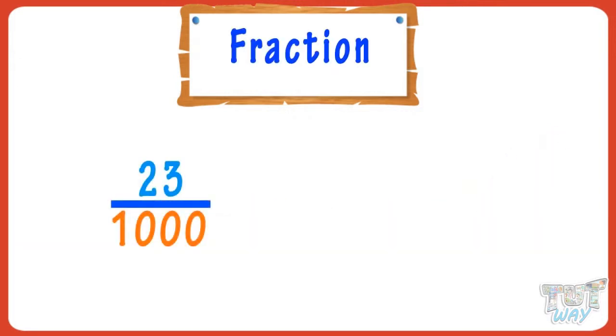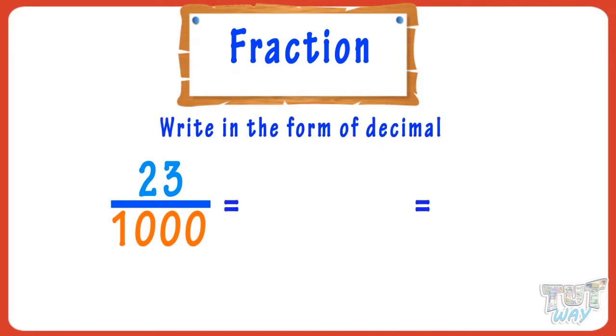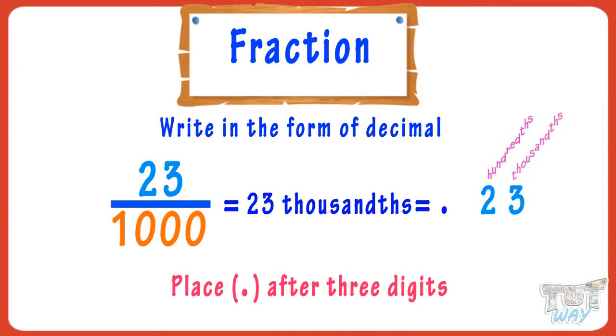Here we have a fraction. We have to write it in the form of a decimal. It is 23 thousandths. So we have to place decimal after three digits from left. But there are only two digits.